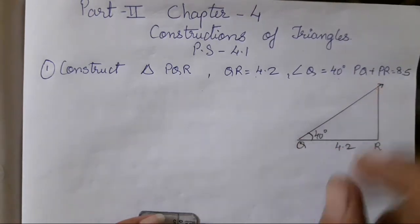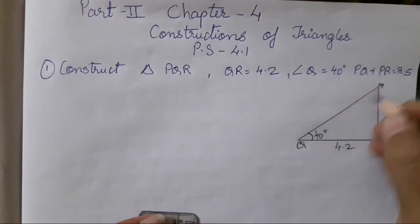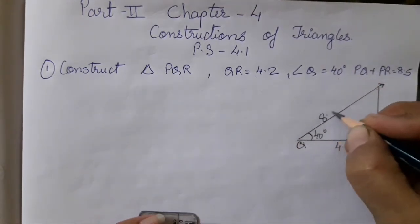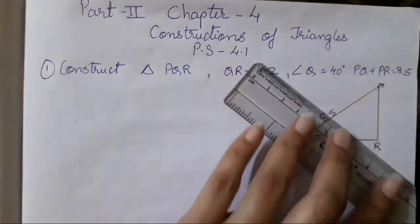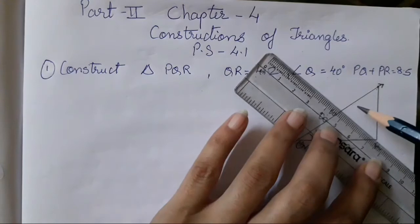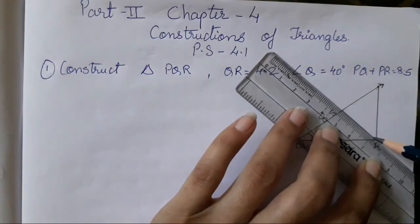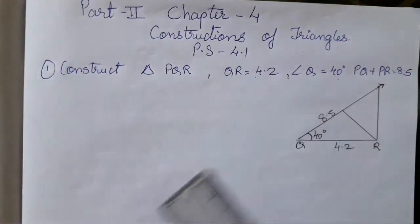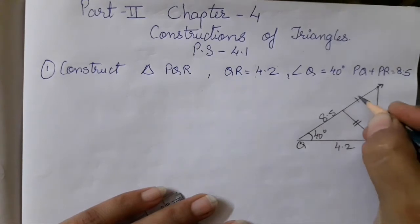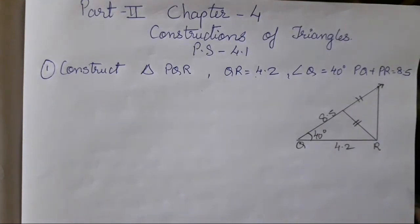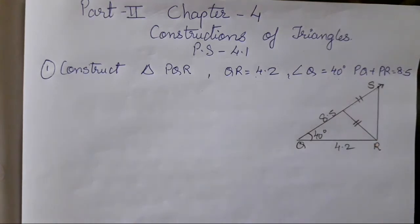This is supposed to be a ray because we have taken an angle. Then we have to construct an arc. This is supposed to be 8.5 till here. It is going to be 8.5 and we need to draw a perpendicular. Perpendicular — this line has to be equal. This point was S.